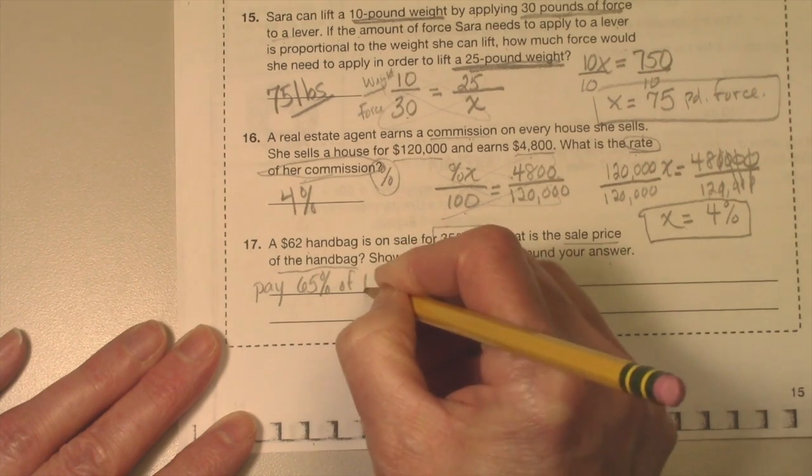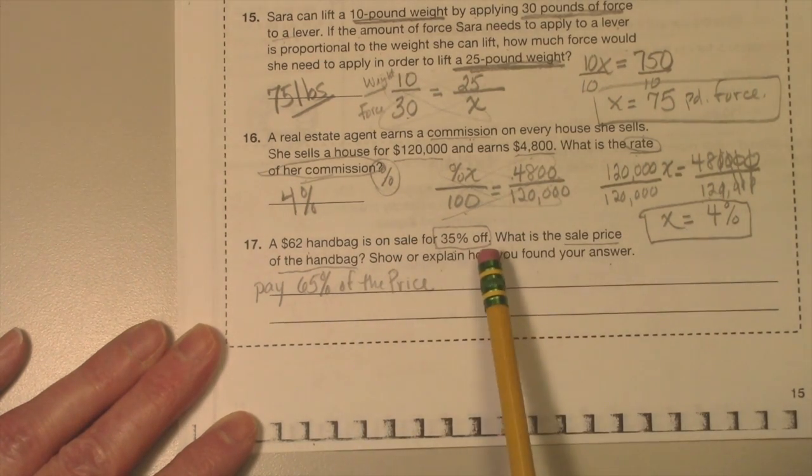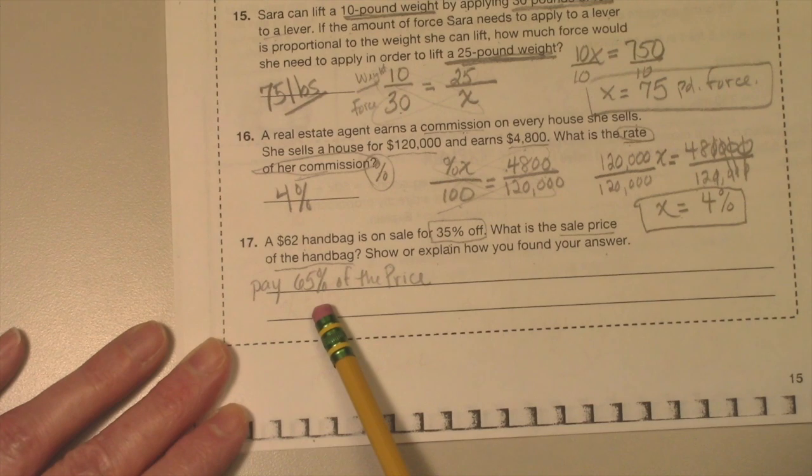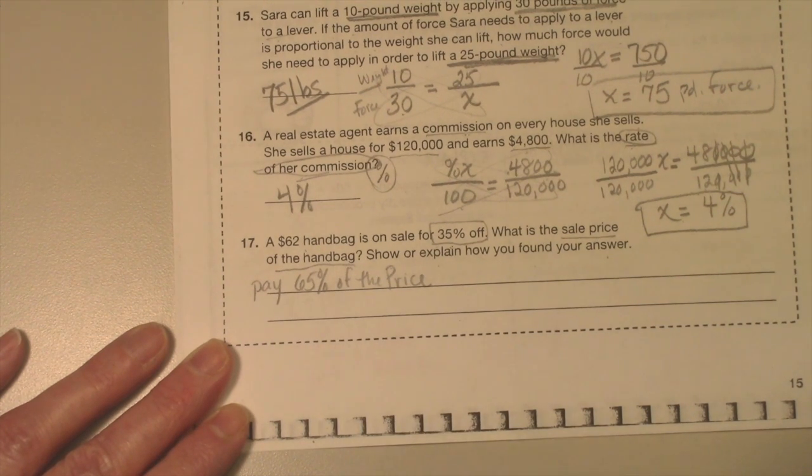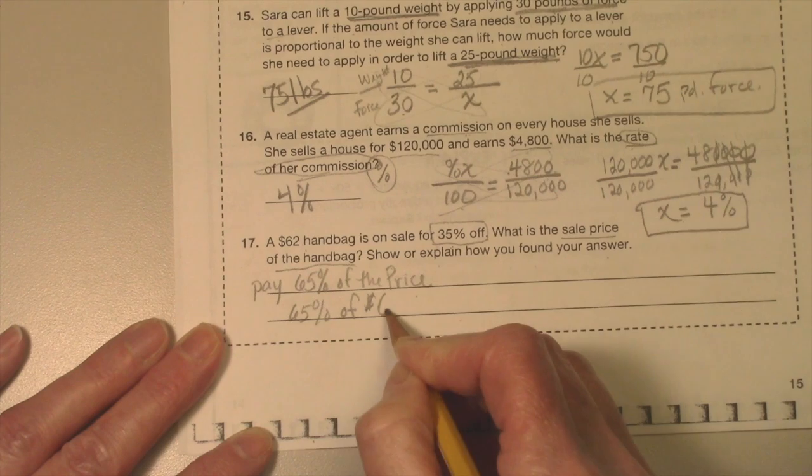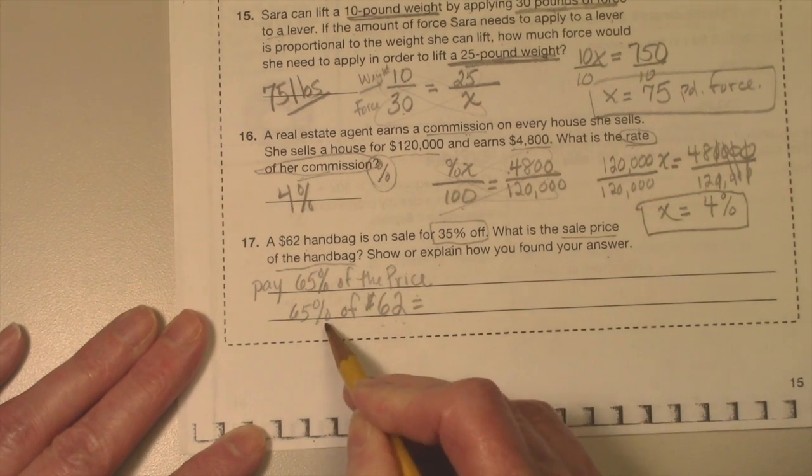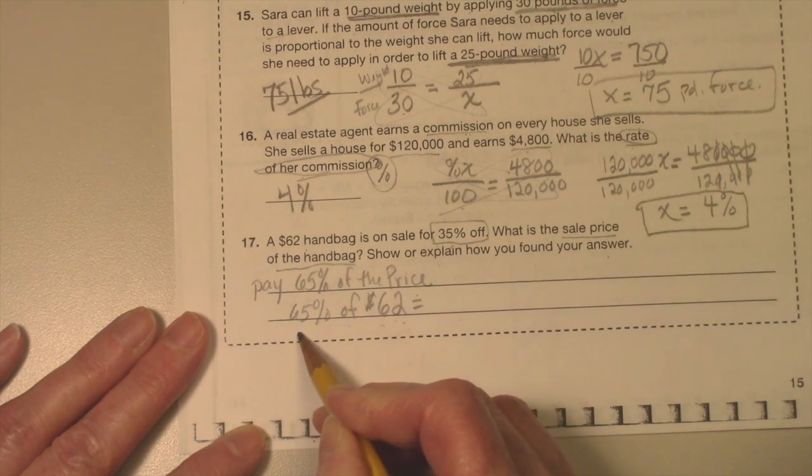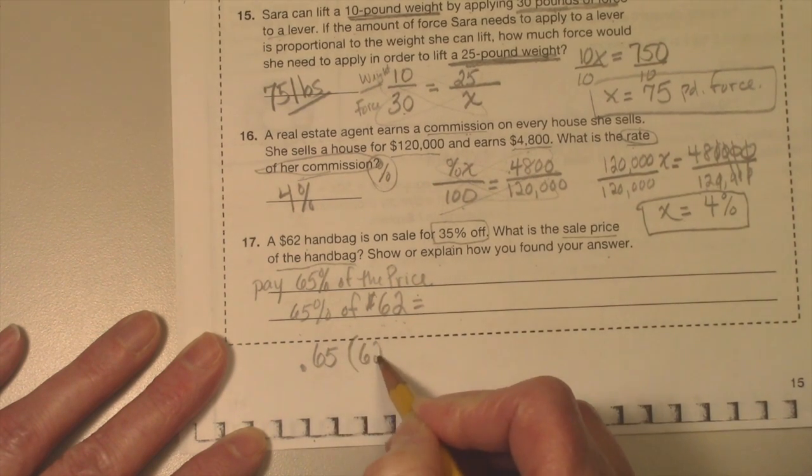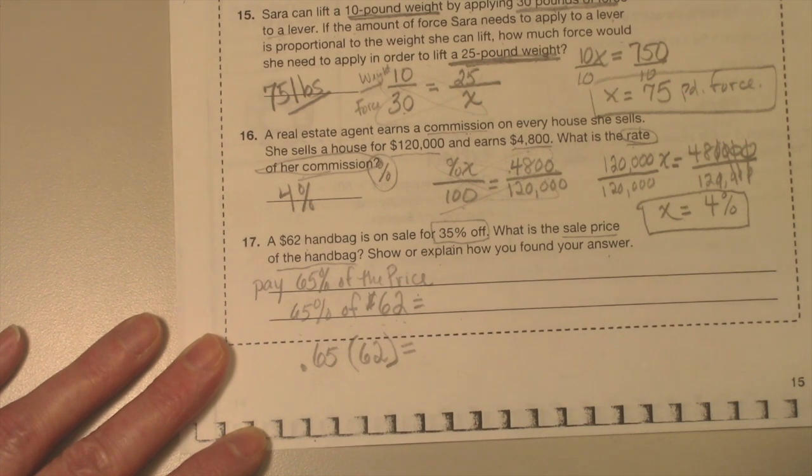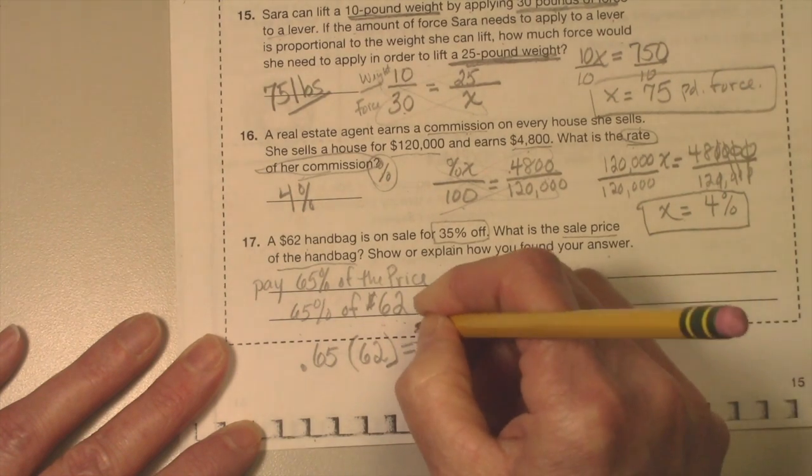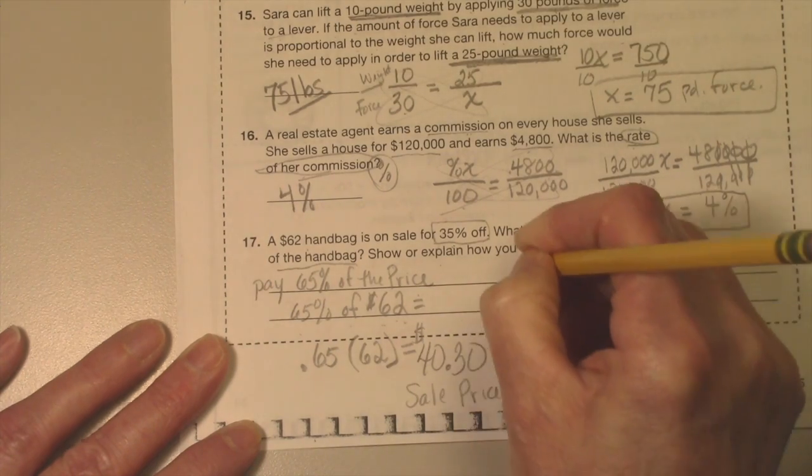Do you agree? 35% off means you're paying 65%, because 35 plus 65 makes 100%. Think about that. So I'm going to pay 65% of the price. Well, 65% of $62—of means multiply. Percent, make it into a decimal by going, moving the decimal two places over. So it's 0.65 times $62. And I'll use my calculator: 0.65 times 62, and I get 40 and 0.3, which is 30 cents. So this is the sale price. Okay, this is the shortest method.